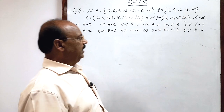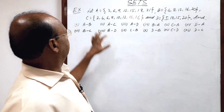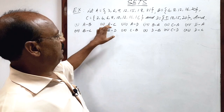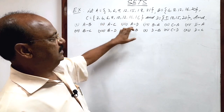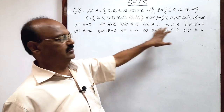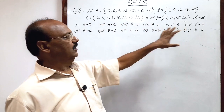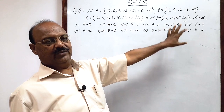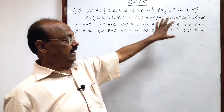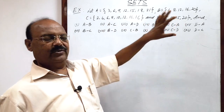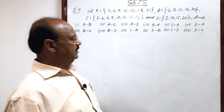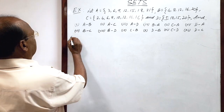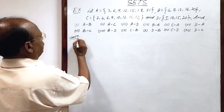We have to find the difference of two sets like A minus B, A minus C, A minus D, B minus A, and so on. There are in total 12 parts of this question and we can do all these questions very easily and interestingly. So let us start solving these questions.